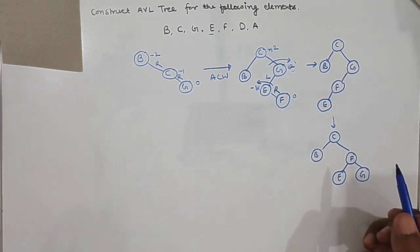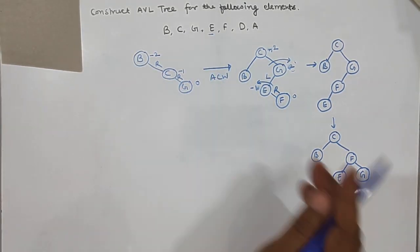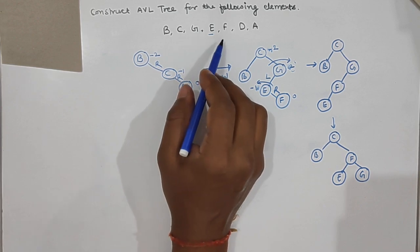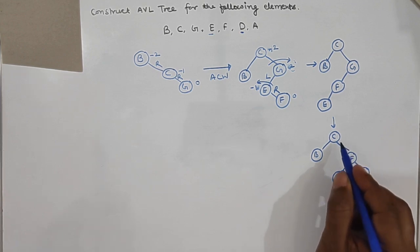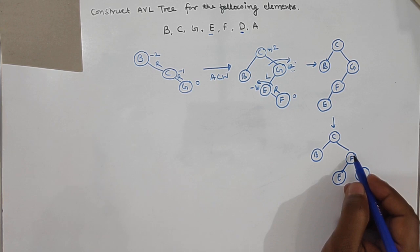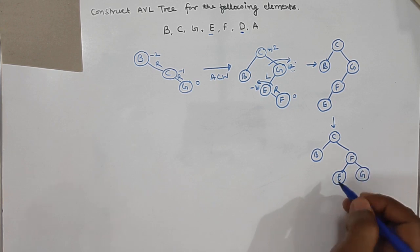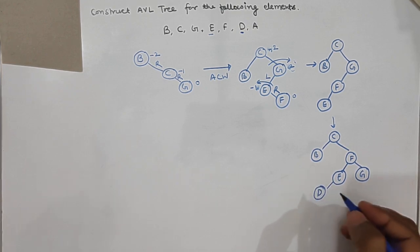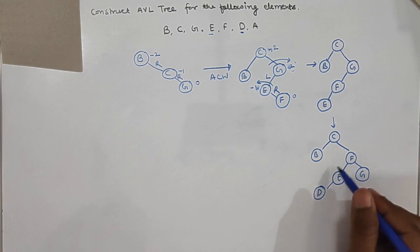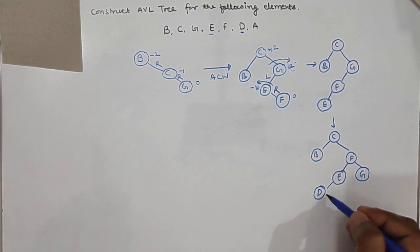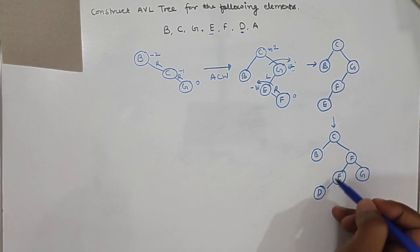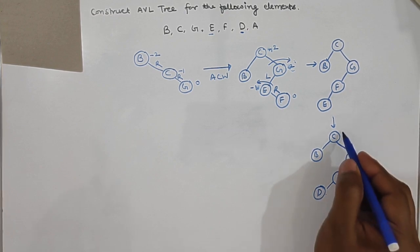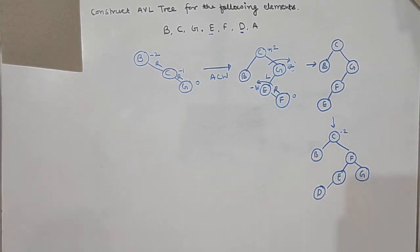Now we insert node d. D is greater than c and less than f, and less than e, so d is inserted at the left side of e. Because d is inserted, there should be a change in the balance factor along this path: 0, 1, 2 minus 1 = 1, and for c the balance factor becomes 3 minus 1 = minus 2. Since -2 is not allowed, we need to fix this.